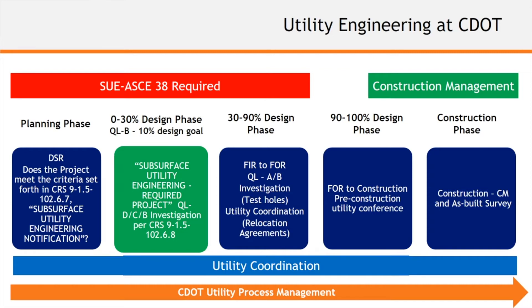You'll see at the top left in red, from Planning Phase through about 90% design, we're conducting SUE investigation, gathering existing utility information, and test holes. On the bottom, you'll see the blue utility coordination, which begins at planning phase and works all the way through to the construction phase. Upper right in green is the construction management phase, beginning at about 90% with early relocations and running to the end of construction. The green in the middle is really the focus on the utility conflict matrix and where it's used, at around 30% design.